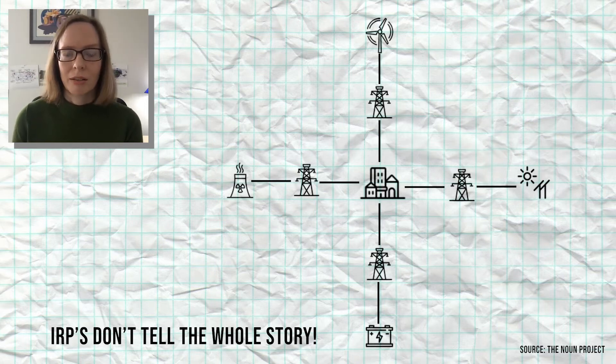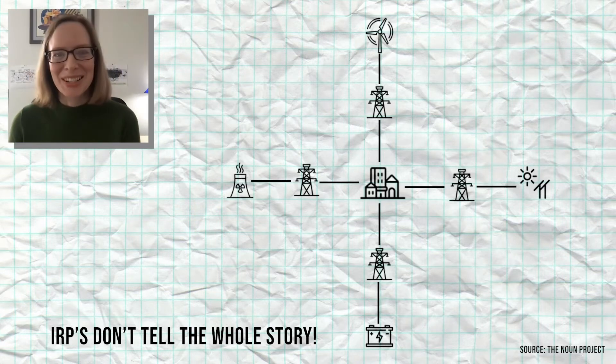Typically, a utility system doing an IRP for their service territory is not modeling the complicated transmission network as a web of interconnected lines. They're basically modeling their power plants, their resources, and their loads as if they're all in the same point — perfectly interconnected — so you don't have to worry about transmission constraints and losses. Maybe they'll model some purchases from outside the system or a remote resource with a transmission constraint on that import, but mostly they're over-simplifying the representation of the complicated grid.